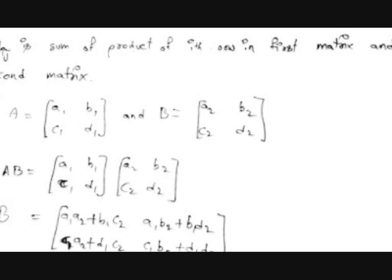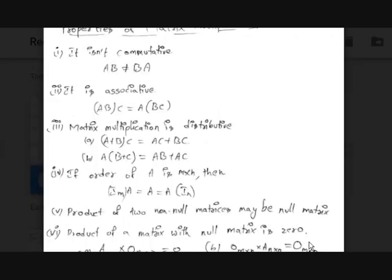The first property is that matrix multiplication is not commutative — AB will not equal BA. We discussed before that for both AB and BA to be possible, both matrices must be square matrices of the same order.